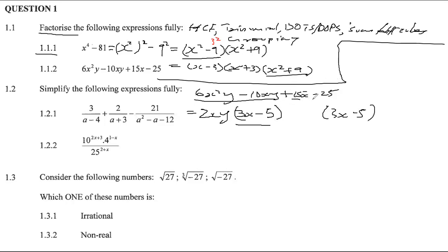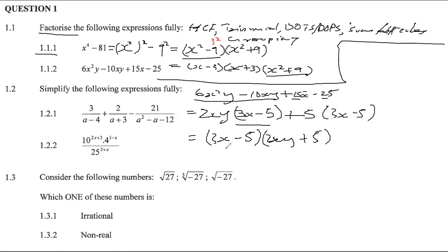At this point, this bracket tells me I must have a factor of 3x minus 5 for this to work correctly. For the second group, 5 is the common factor: 15x divided by 3x is 5, and 25 divided by 5 is 5. So I take the highest common factor of 3x minus 5, leaving 2xy plus 5. That gives the fully factorized answer: (3x minus 5)(2xy plus 5).